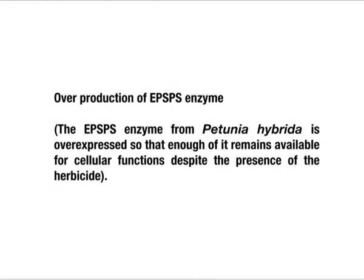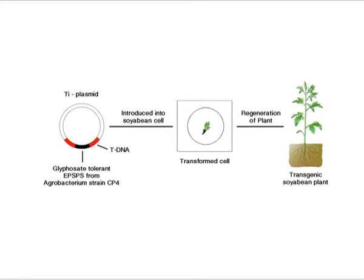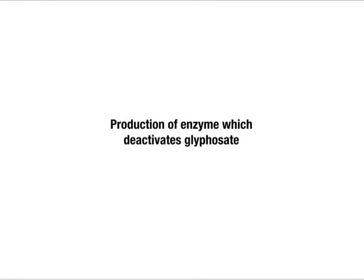The first strategy is the overproduction of EPSPS enzyme. The EPSPS enzyme from Petunia hybrida is overexpressed so that enough of it remains available for cellular functions despite the presence of the herbicide. Secondly, the production of EPSPS enzyme which is not affected by glyphosate. In this case, glyphosate tolerant EPSPS enzyme derived from Agrobacterium strain CP4 was introduced to soybean, and transgenic soybean exhibited high tolerance to glyphosate.